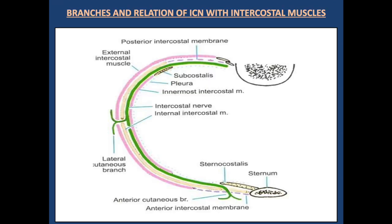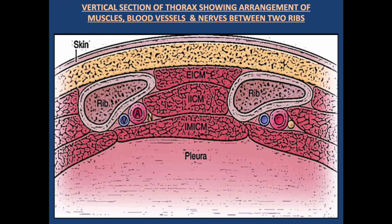This diagram shows the branches and relation of the intercostal nerve with the intercostal muscles. The intercostal nerve runs between the internal intercostal muscle and innermost intercostal muscle. Another diagram shows a vertical section of the thorax depicting the arrangement of muscles, blood vessels, and nerves between two ribs.